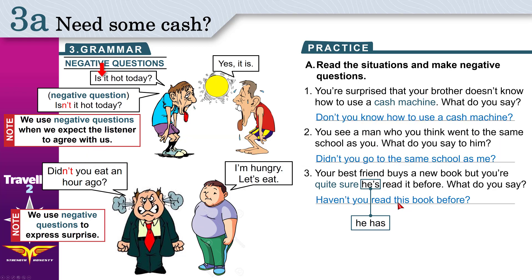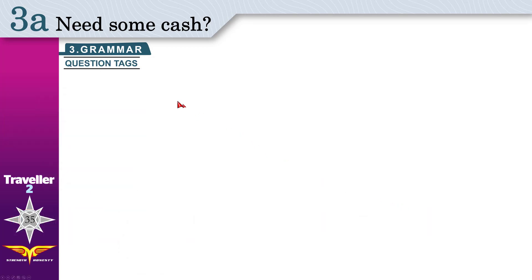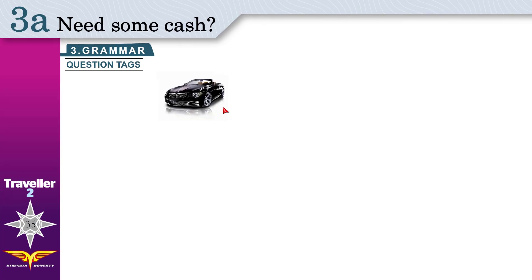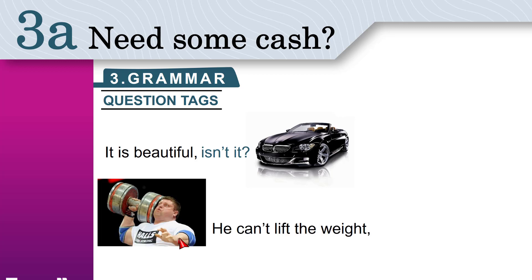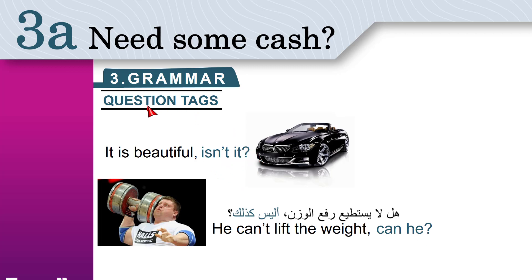Now let's move on to the second half of today's grammar: question tags. For example: 'It is beautiful, isn't it?' or 'He can't lift the weight, can he?' 'Isn't it' and 'can he' are question tags. We use them just like negative questions — when we want somebody to agree with us.